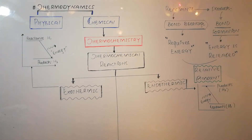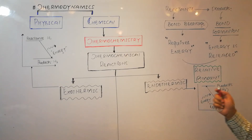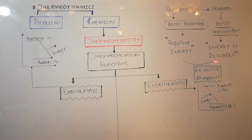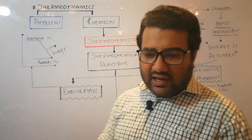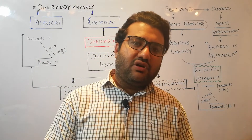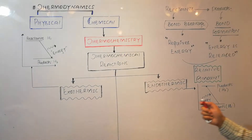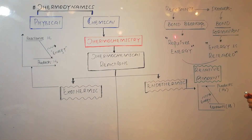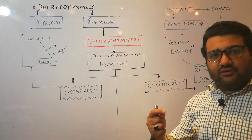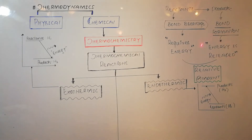Reactants change into products in a system. Whenever the reactants change into the products, the bonds in the reactants are broken down and the bonds in the products are formed. Bond breakage always requires energy and bond formation always releases energy. This means during any chemical reaction, energy is absorbed as well as released. The energy that breaks the bonds in the reactants is taken from the surroundings.